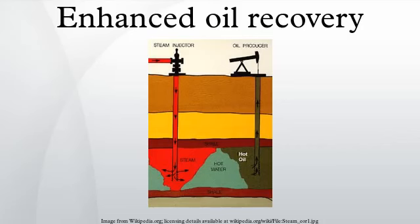Gas injection or miscible flooding is presently the most commonly used approach in enhanced oil recovery. Miscible flooding is a general term for injection processes that introduce miscible gases into the reservoir. A miscible displacement process maintains reservoir pressure and improves oil displacement because the interfacial tension between oil and water is reduced, removing the interface between the two interacting fluids, allowing for total displacement efficiency. Gases used include CO2, natural gas, or nitrogen.